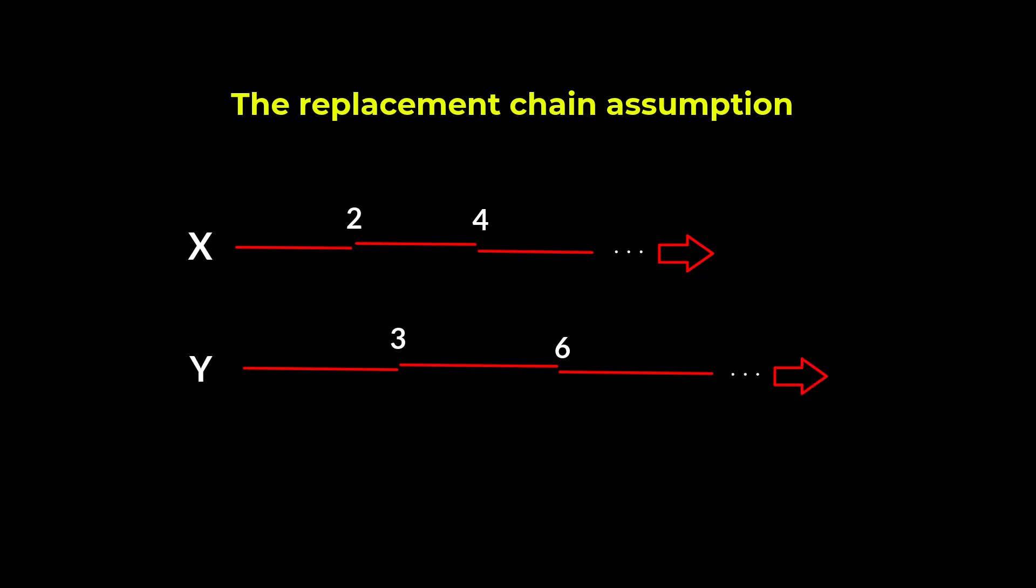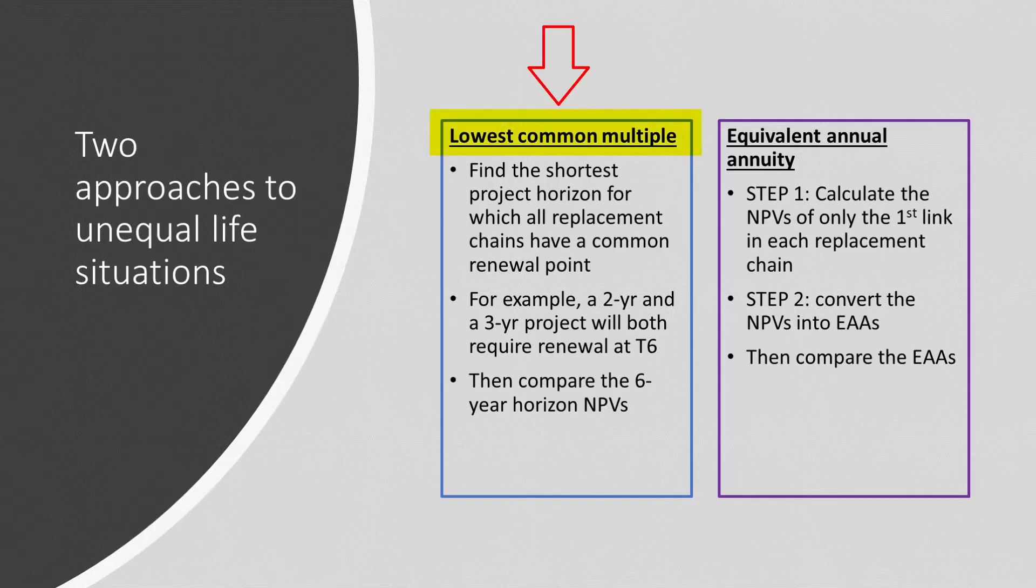There are two ways to rank such projects. In the first method, the lowest common multiple of the different projects is identified. For a two-year project and a three-year project, the lowest common multiple is six years, and this becomes the project horizon for both projects. Each project is then assumed to be replaced as many times as is necessary in the six-year horizon. The net present values of the equal length six-year project chains can now be validly compared with each other.